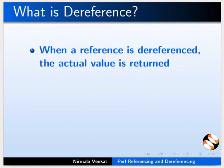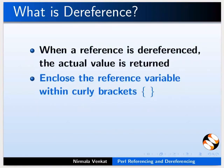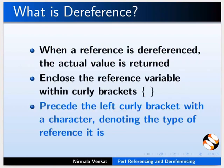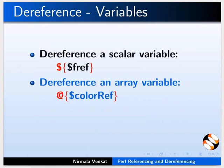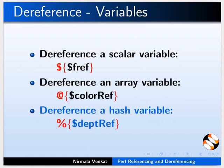What is dereference? When a reference is dereferenced, the actual value is returned. Dereference is done by enclosing the reference variable within curly brackets and preceding the left curly bracket with a character denoting the type of reference it is. A scalar variable is dereferenced by dollar sign and curly brackets. An array variable is dereferenced by at the rate symbol and curly brackets. A hash variable is dereferenced by percentage symbol and curly brackets.